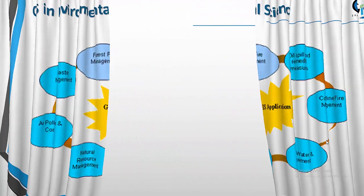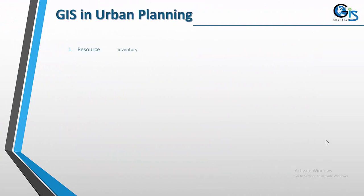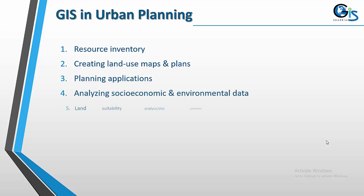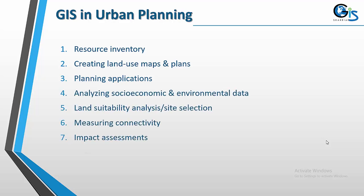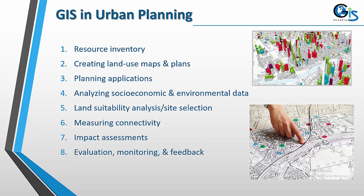In urban planning, virtually 100 percent of urban planners are already using GIS in their projects. Applications include resource inventory, creating land use maps and plans, planning applications, analyzing socioeconomic and environmental data, land suitability analysis, site selection, measuring connectivity, impact assessment, evaluation, monitoring, and feedback.